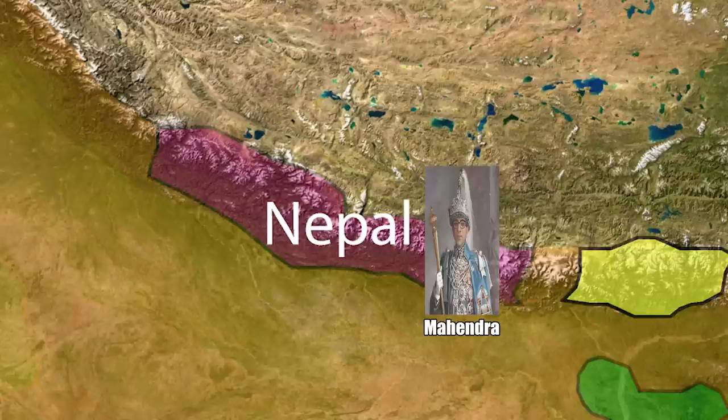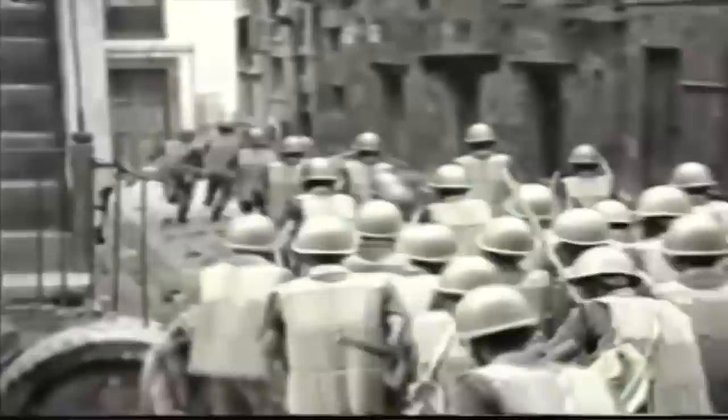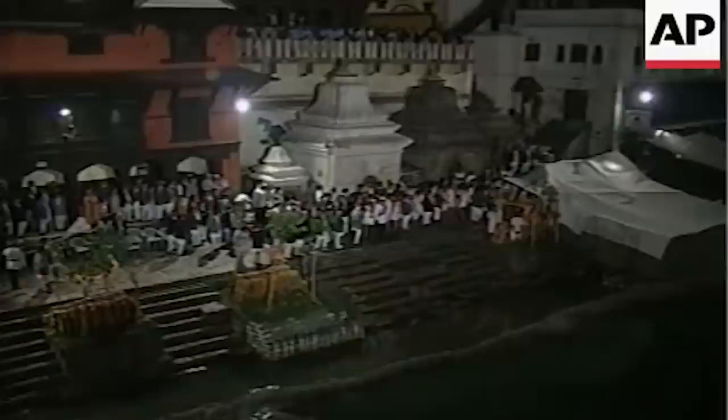Mahendra issued a new constitution in 1959, and the following election gave the socialist Nepali Congress Party a substantial victory. When the king discovered that he couldn't really work with the Nepali socialists, he decided to suspend the constitution and instead have the country run by a hierarchy of local councils. He would die in 1972 and would then be succeeded by his son, Birendra. Birendra continued to rule through the council system until 1990, when protests and riots broke out around Nepal. He responded by agreeing to a new constitution. This quieted things down initially, but ultimately failed in preventing the Nepalese Civil War from breaking out in 1996, which lasted until 2006.